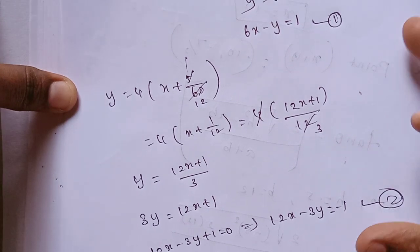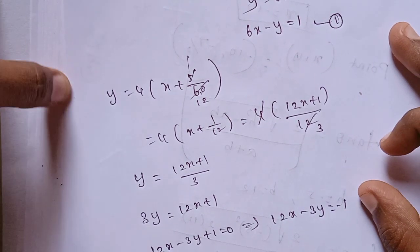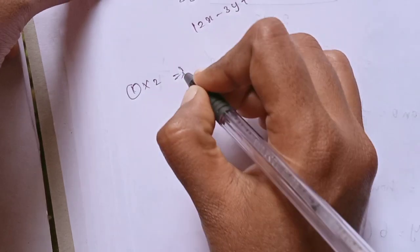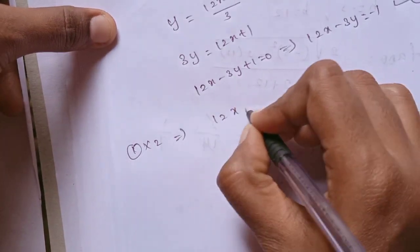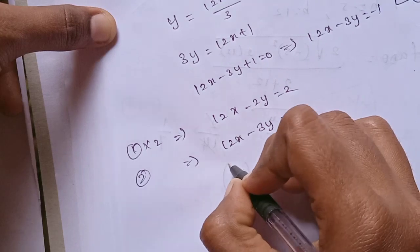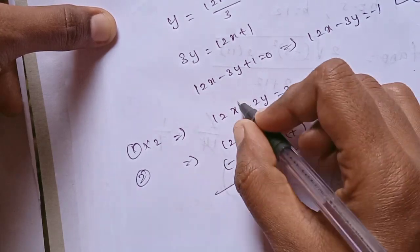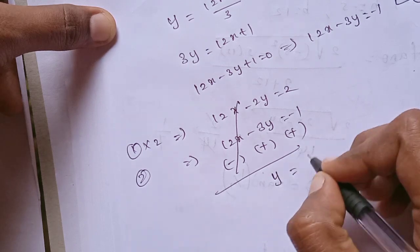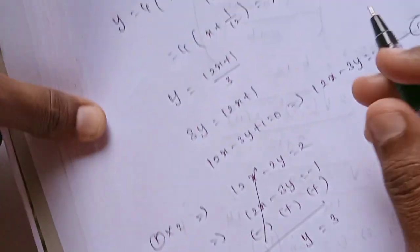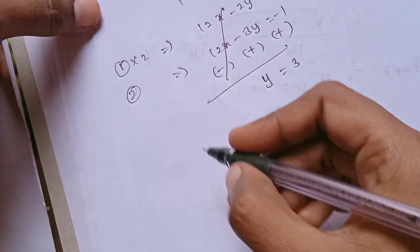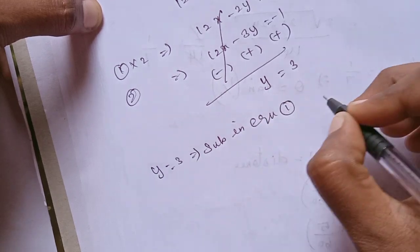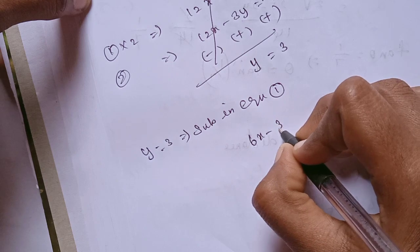Now equation 1 and equation 2 — we will simplify. Cancel x. Multiply equation 1 by 2: 12x minus 2y equals 2. Equation 2: 12x minus 3y equals minus 1. Subtracting — minus plus plus, cancel. Minus 2y plus 3y equals y. So 2 plus 1y equals 3, giving y equals 1.